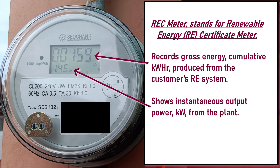This is the other meter installed in my net metering setup. This is called the REC meter, or the renewable energy certificate meter. The utility uses this meter to measure the gross electricity generated by the renewable energy system, in this case my rooftop solar power plant. The readings from the REC meter will be used as a basis for the computation of subsidies, discounts, and for compliance with renewable portfolio standards. The gross electricity during a billing period is present reading minus previous reading.